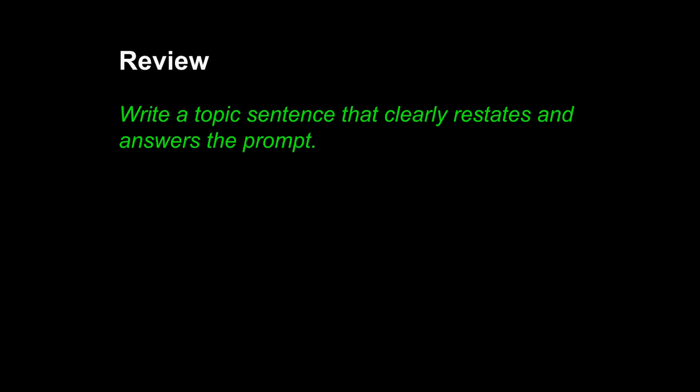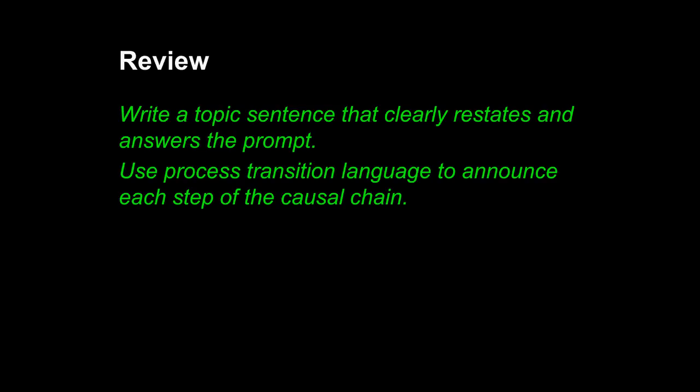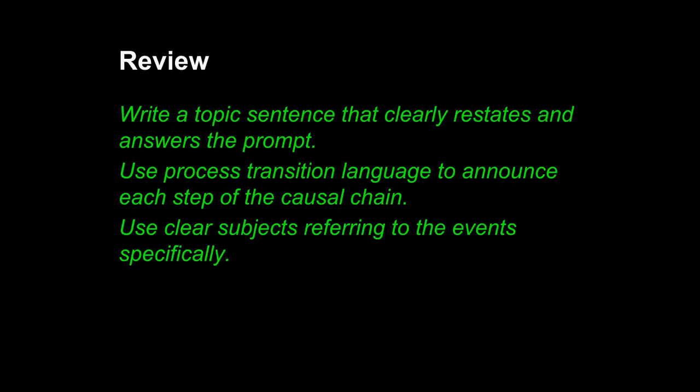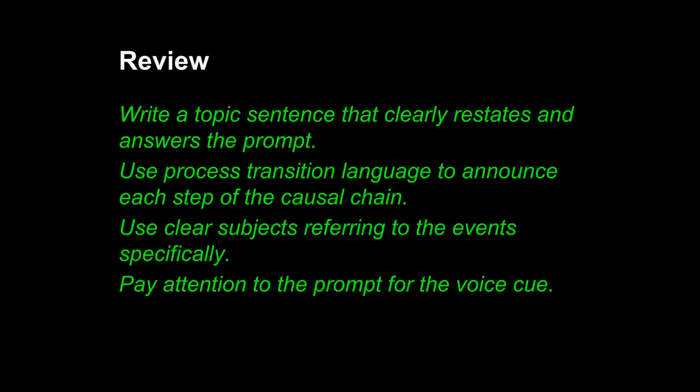Let's review what we've learned today. First, in prompt-based writing, write a topic sentence that clearly restates and answers the prompt. Secondly, use process transition language to announce each step of the causal chain — this transition language can be simple and effective. Third, use clear subjects referring to the events specifically; refer to scientific terms or different objects within a lab. You can also use yourself as a subject if the prompt has asked for the first person voice. Finally, pay attention to the prompt for that voice cue. Realize when the prompt is asking for you to speak about yourself, about the reader, or just about the concepts under discussion. If you remember these points, you can write an effective prompt-based response for any subject.